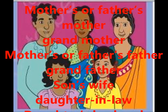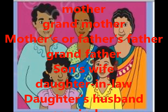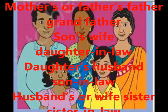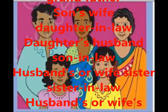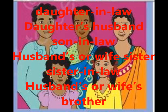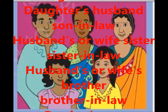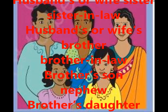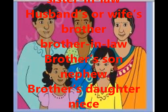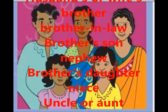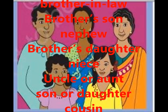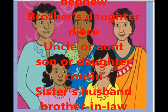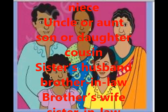Son's wife is your daughter-in-law. Daughter's husband is your son-in-law. Husband's or wife's sister is your sister-in-law. Husband's or wife's brother is your brother-in-law. Brother's son is your nephew. Brother's daughter is your niece. Uncle's or aunt's son or daughter is your cousin. Sister's husband is your brother-in-law. Brother's wife is your sister-in-law.